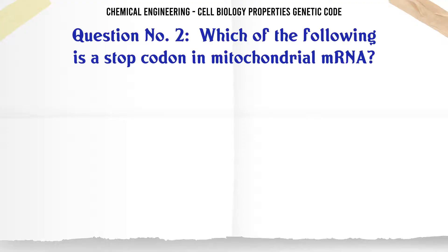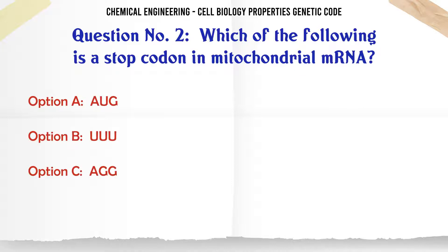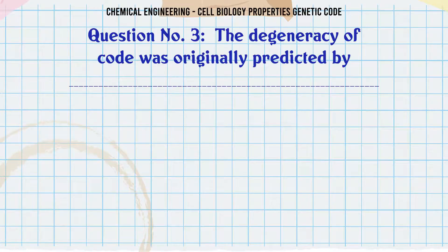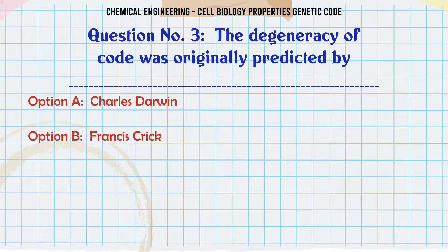Which of the following is a stop codon in mitochondrial mRNA? A) AUG, B) UUU, C) AGG, D) UGA. The correct answer is AGG.